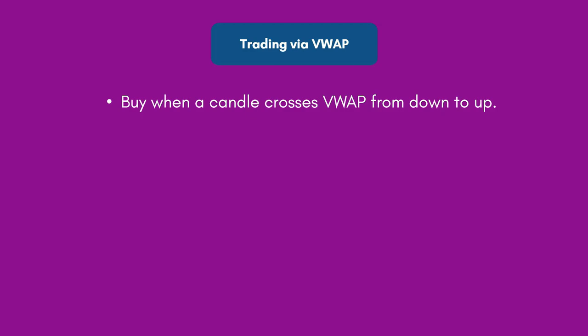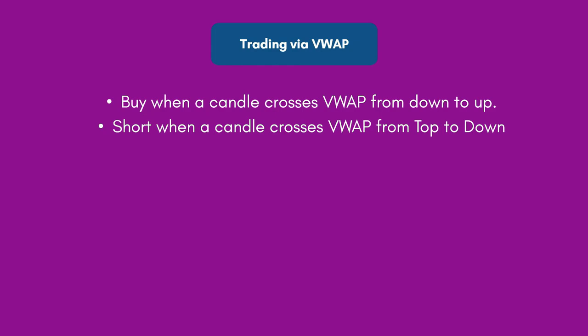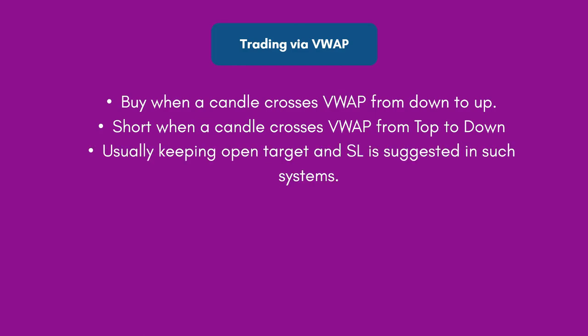Here are the trading rules: You buy when a candle crosses VWAP from bottom to top — initiate the trade on the opening of the next candle. You short when a candle crosses VWAP from top to bottom — initiate the short on the next candle. It is suggested to keep targets and stop-loss open, because when you catch a proper entry you want to ride the end-to-end rally, so the stop-loss is the reversal itself.